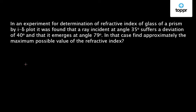Let us discuss a question on ray optics which came in J.E. Mains 2016. In an experiment for determination of refractive index of glass of a prism by I-delta plot, it was found that a ray incident at an angle 35 degrees suffers a deviation of 40 degrees and that it emerges at an angle 79 degrees. In that case, find approximately the maximum possible value of the refractive index.